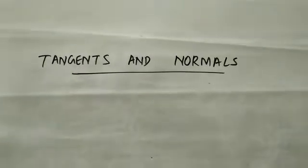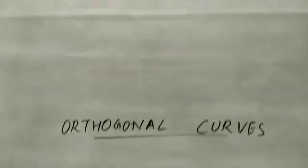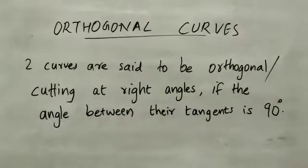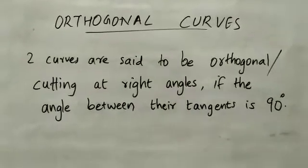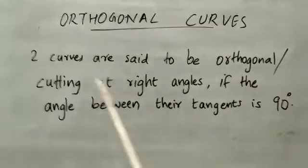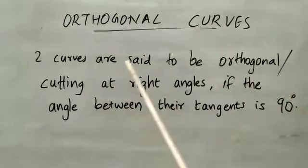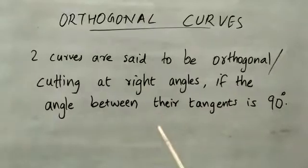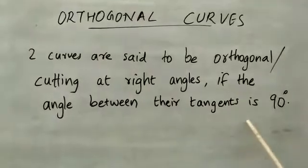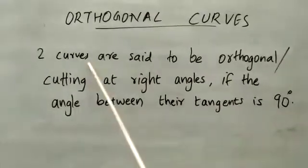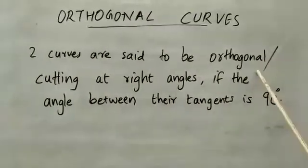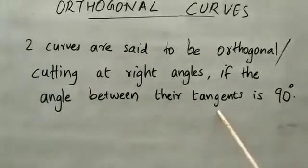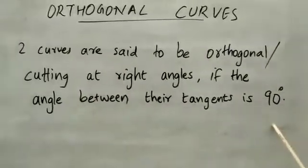Tangents and Normals Part 3: Orthogonal Curves. The definition is: two curves are said to be orthogonal, or cutting at right angles, if the angle between the tangents is 90 degrees. These two curves are orthogonal when the angle between their tangents is 90 degrees.